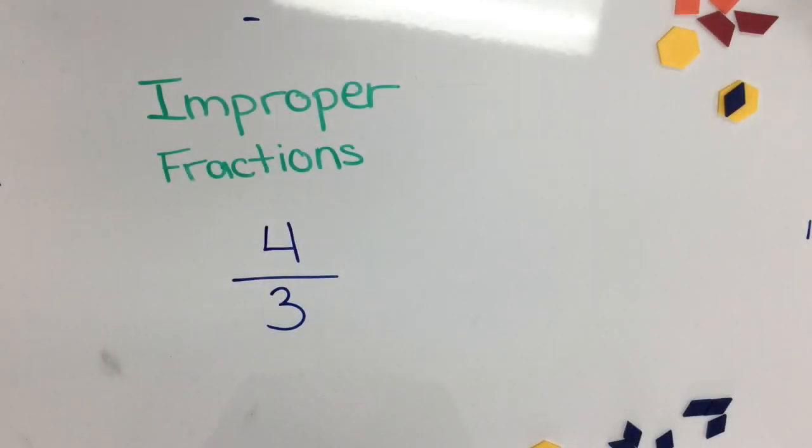So how can we build an improper fraction using manipulatives? If we have a look at the denominator we see three so we'll know that our whole has three equal pieces.